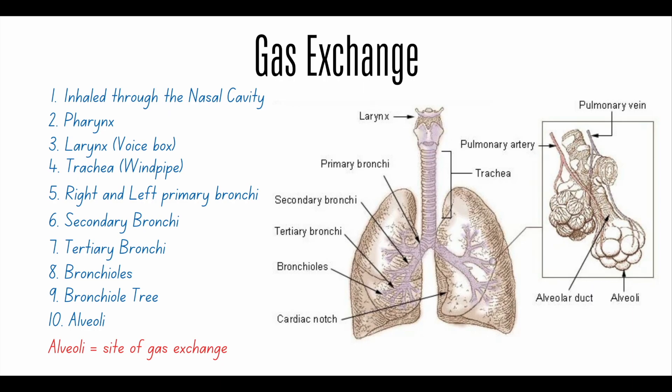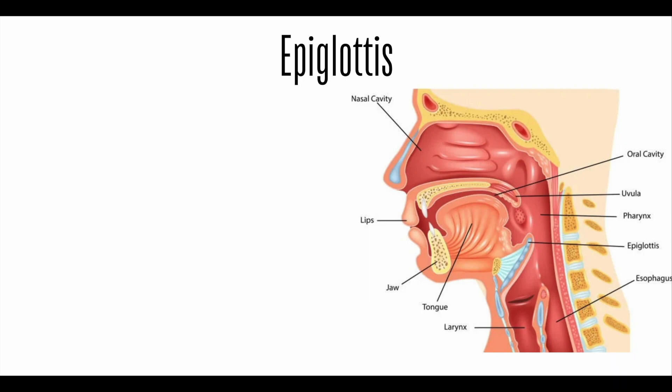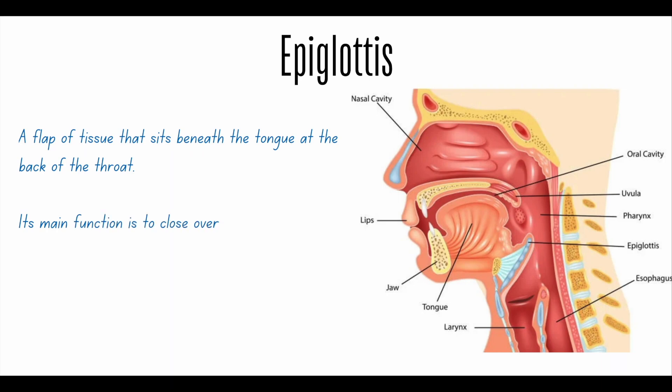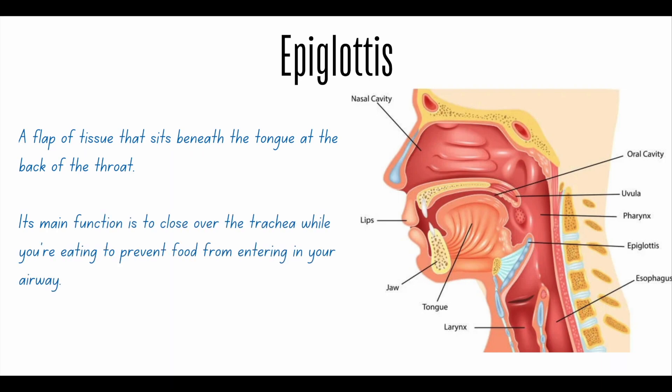Before continuing, I want to mention an important structure called the epiglottis, which may appear on your TEAS exam. The epiglottis covers the trachea when we're eating so that food or water doesn't enter the respiratory system. If food or water does enter the respiratory system, that's when we begin to cough — the cough reflex.